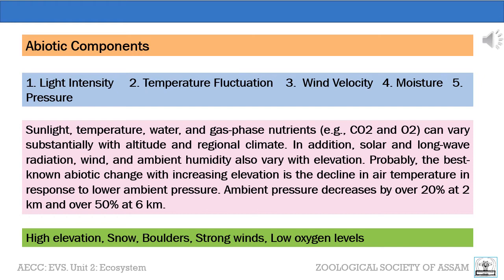Probably the best known abiotic change with increasing elevation is the decline in air temperature in response to lower ambient pressure. Ambient pressure decreases by over 20% at 2 km and over 50% at 6 km. In addition, mountain ranges are sometimes subject to more precipitation than other ecosystems. The abiotic factors in the mountain ecosystem include high elevation, snow, boulders, strong wind, low oxygen level, etc.